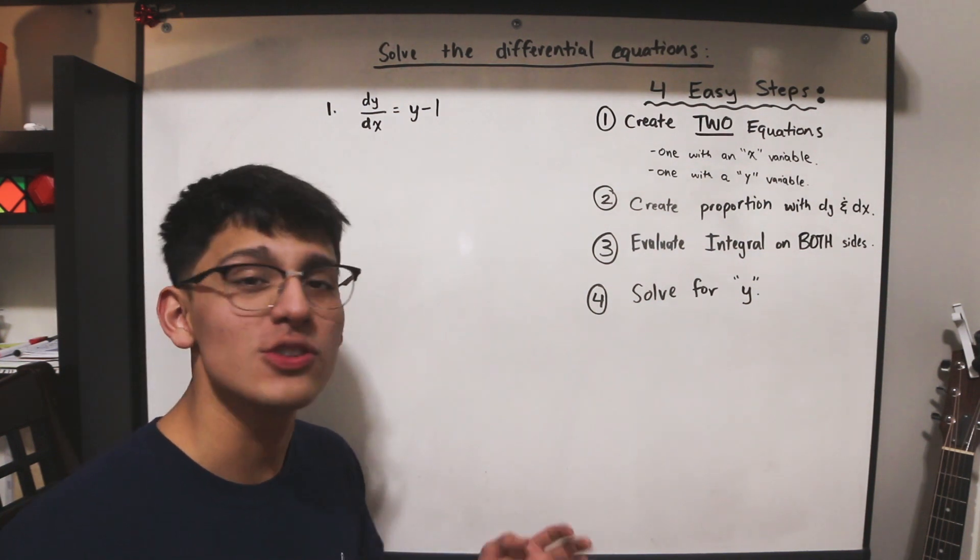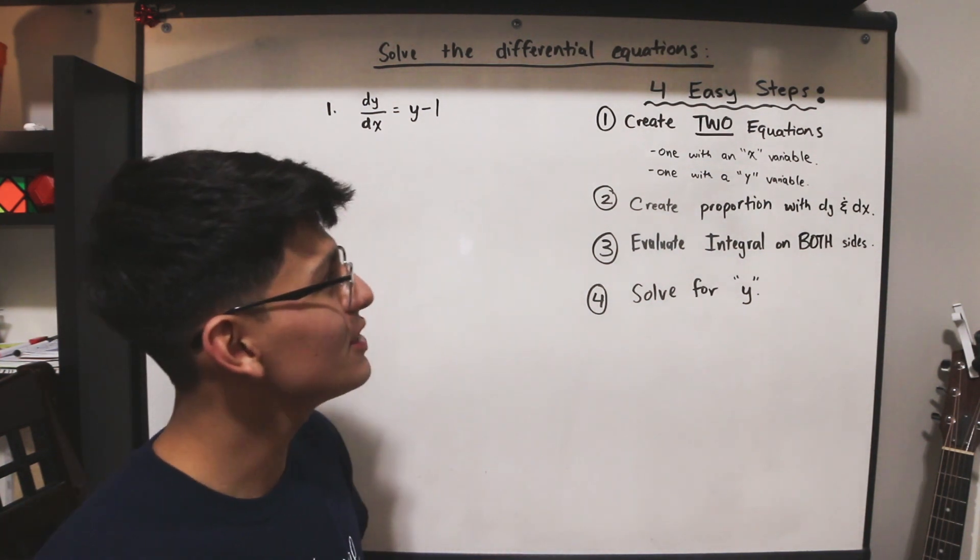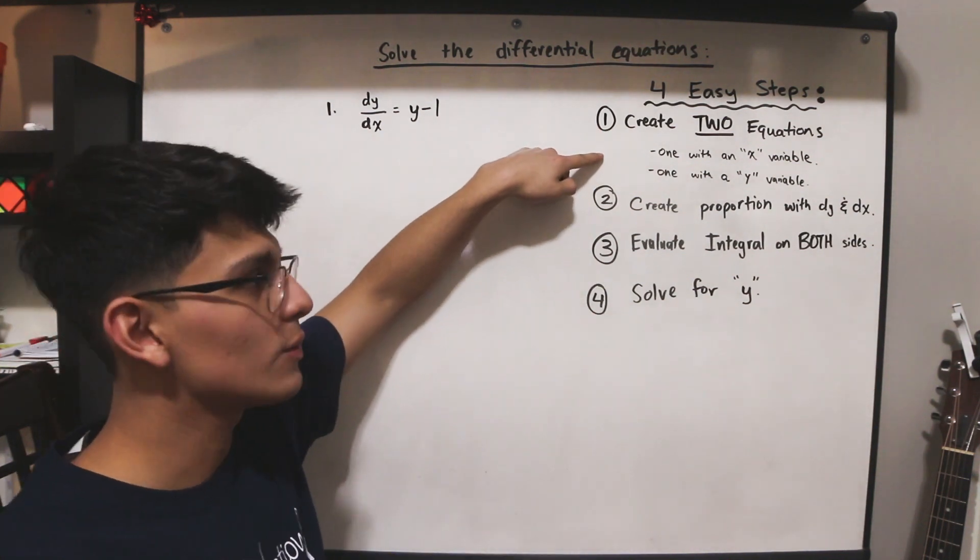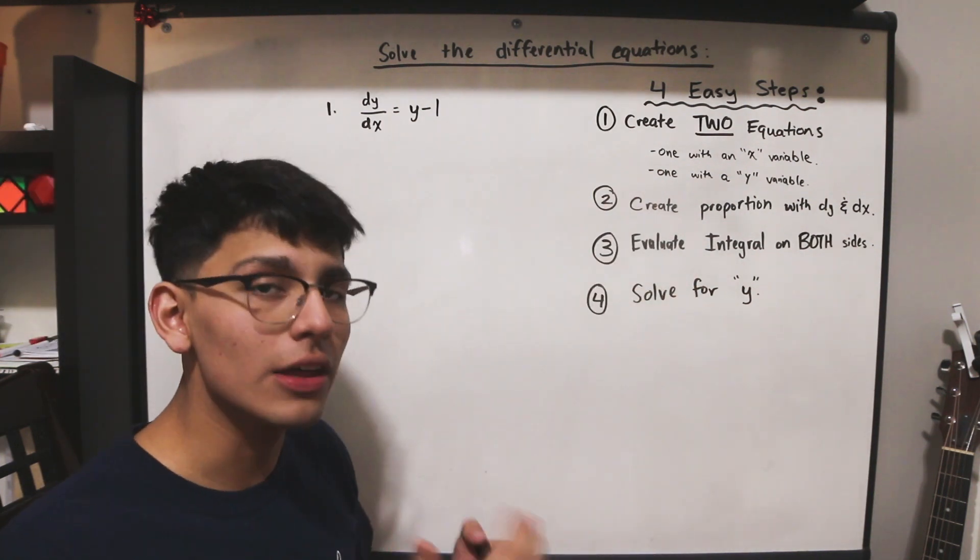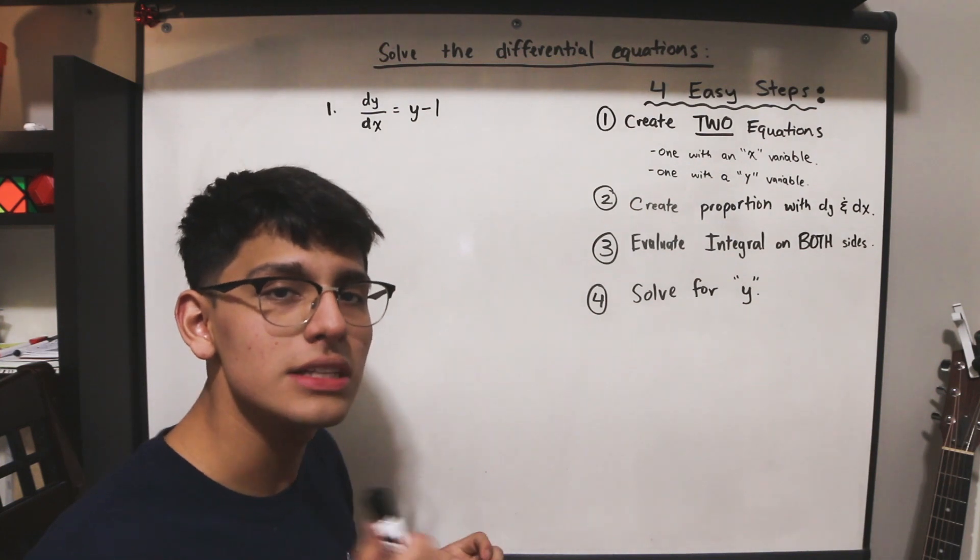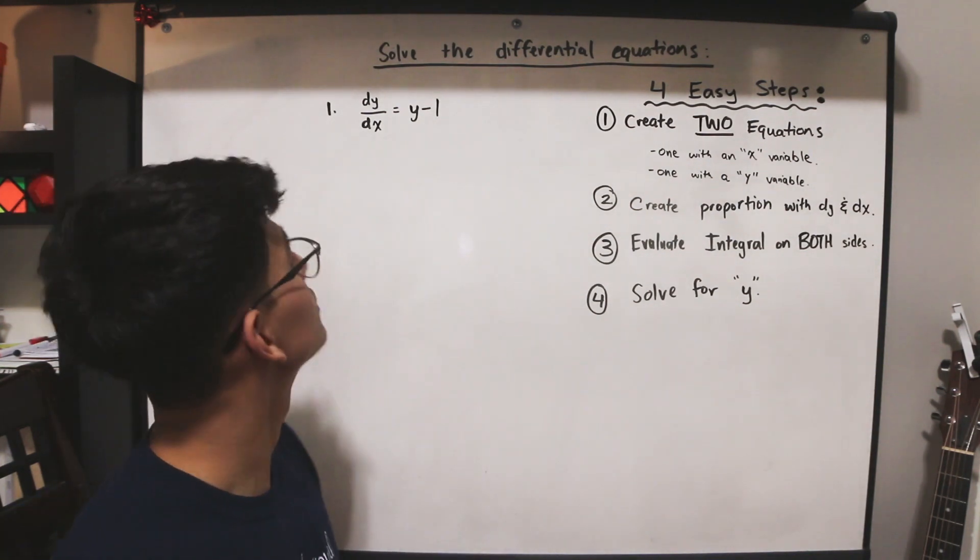There are four easy steps to solving differential equations using separation of variables. These four steps are: create two equations, one with an x variable and one with a y variable; create a proportion with dy and dx; evaluate the integral on both sides; and solve for y. Let's see how these steps can be applied to solve this differential equation here.